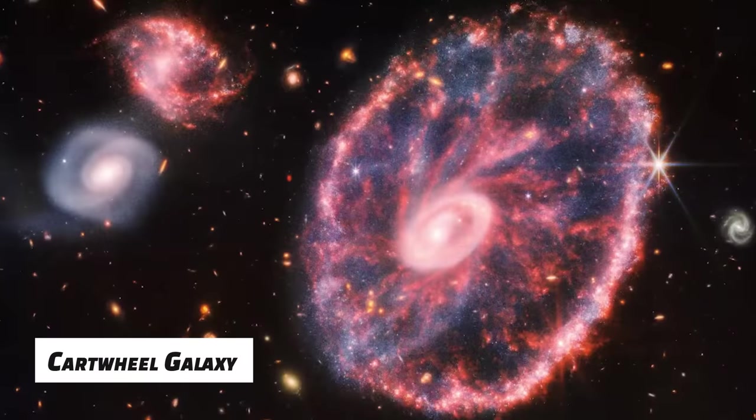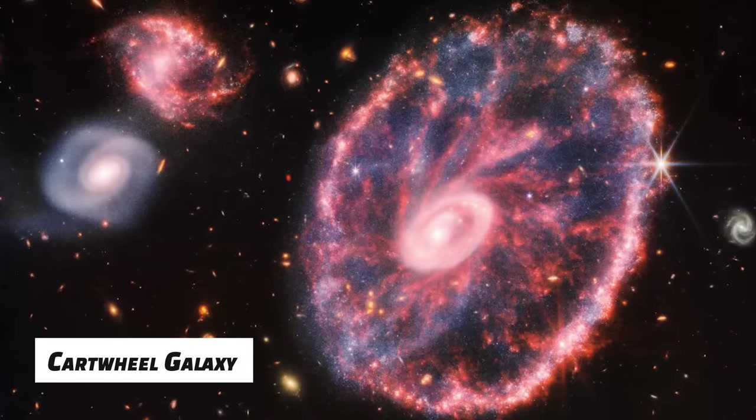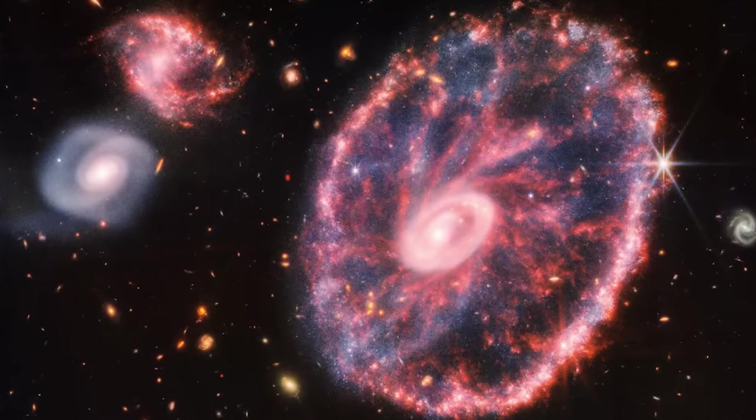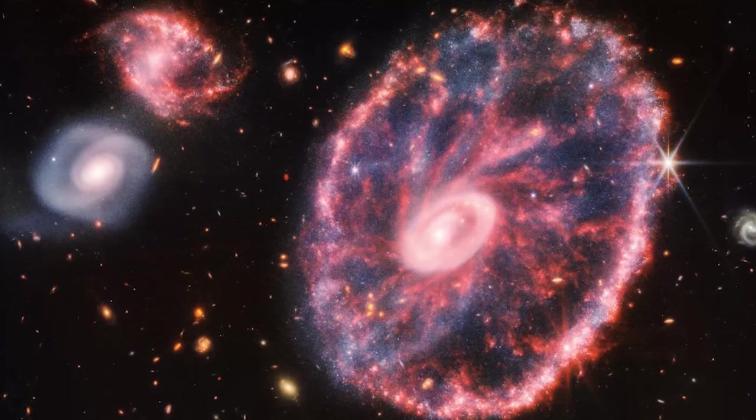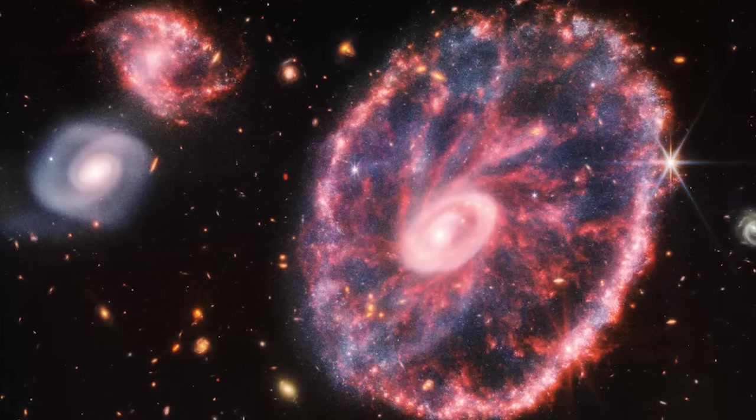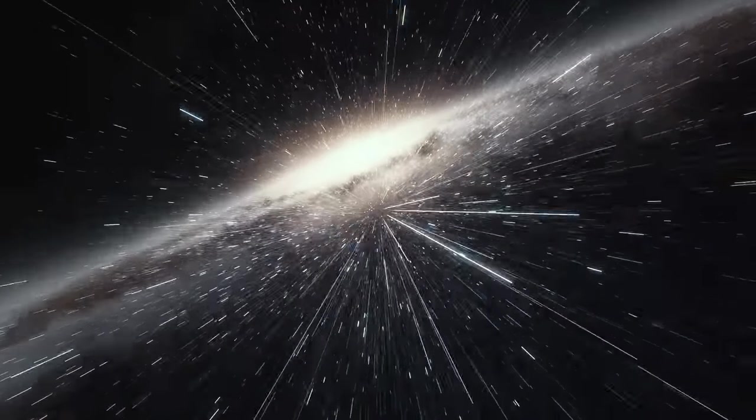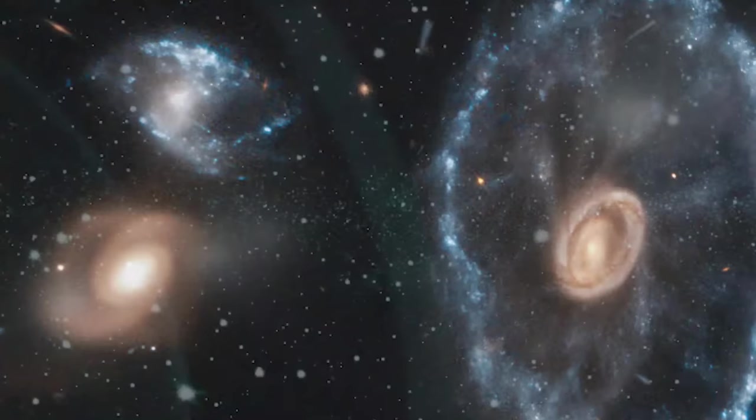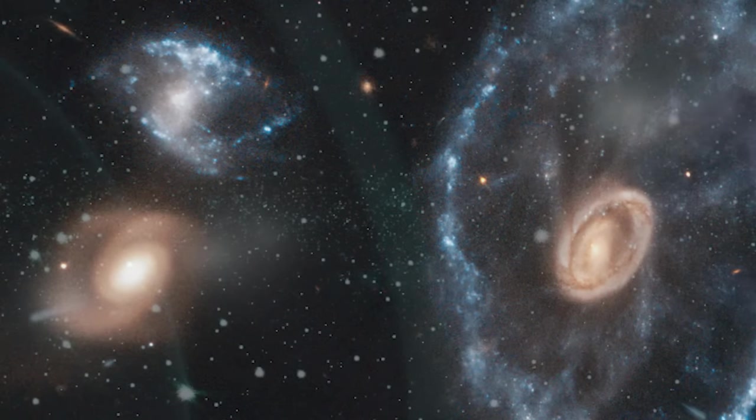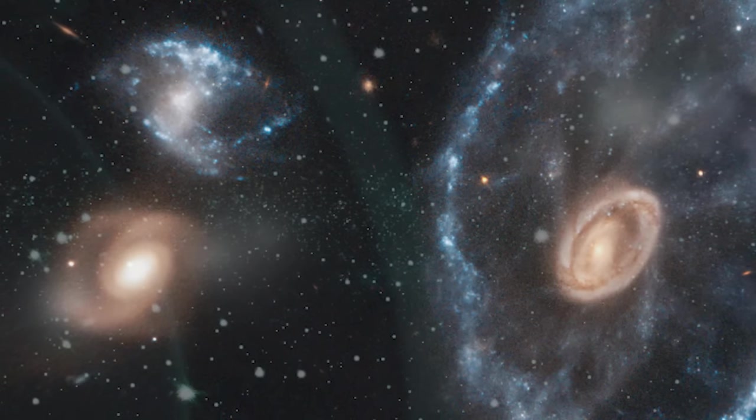This image of the Cartwheel Galaxy and its partner galaxies is a composite of the near-infrared camera and mid-infrared instrument of the James Webb Space Telescope. This galaxy, which is located approximately 500 million light-years away, was produced when a large galaxy and a smaller galaxy collided at great speed.